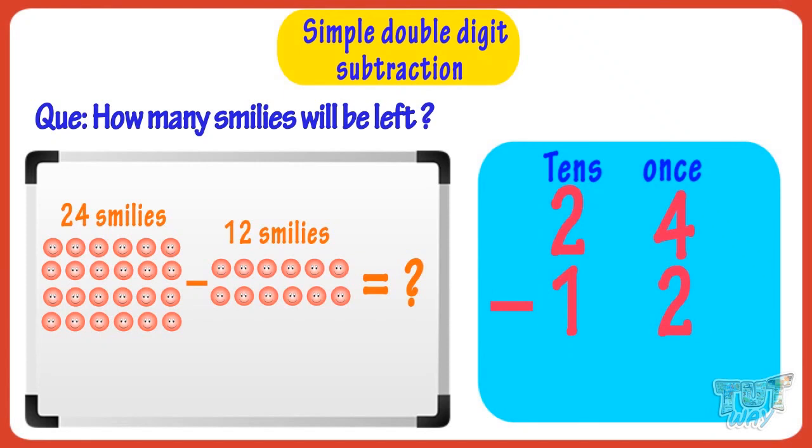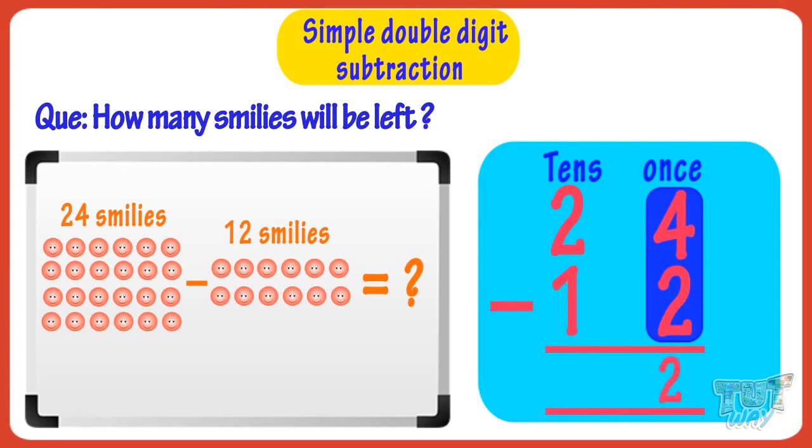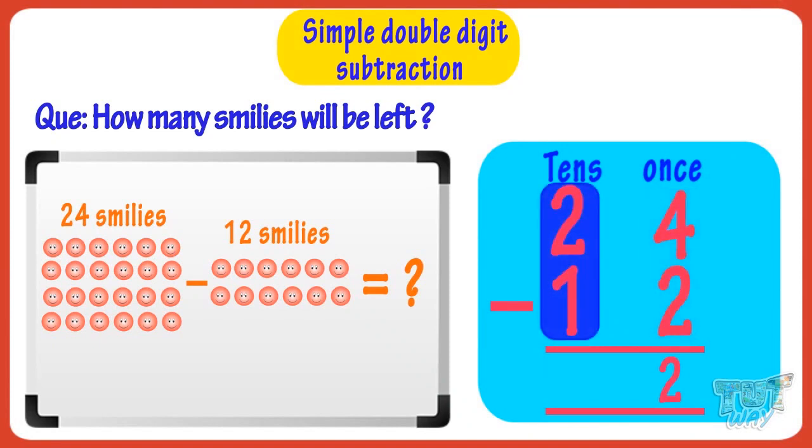Good! Now subtract 2 from 4. You get 2. So write 2 at the one's place. Now subtract 1 from 2. You get 1 and write it at the tens place.